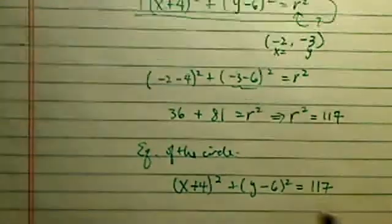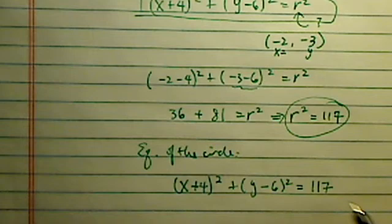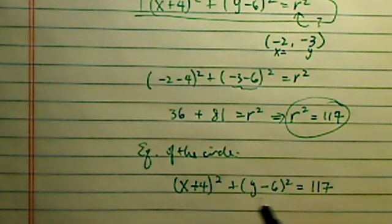So all I did is I plug it in there. I have my r squared over here. x plus 4 squared plus y minus 6 squared equal to radius squared.